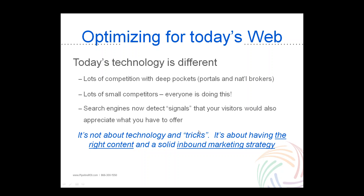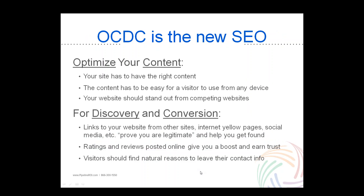Since we can't target search engines anymore through traditional SEO — search engine optimization — but search engines are still part of it, we need a different model. Most marketing gurus don't use the phrase SEO anymore. The phrase they use instead is OCDC, which stands for Optimizing your Content for Discovery and Conversion. This is a bigger picture than just SEO by itself, and it does include SEO as one role, but we start by focusing on your content.